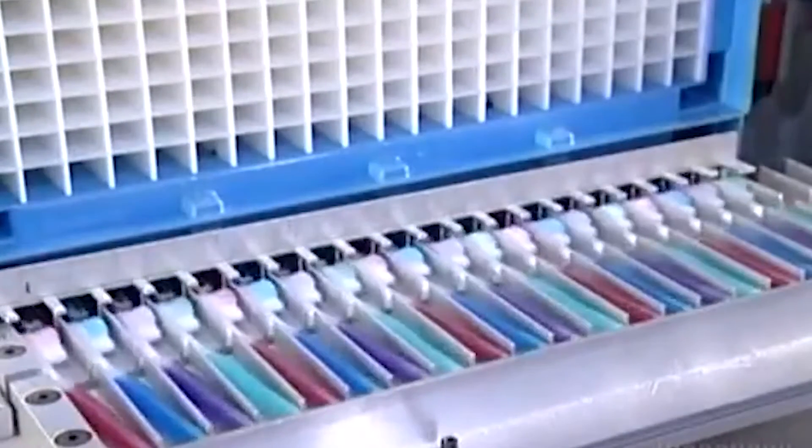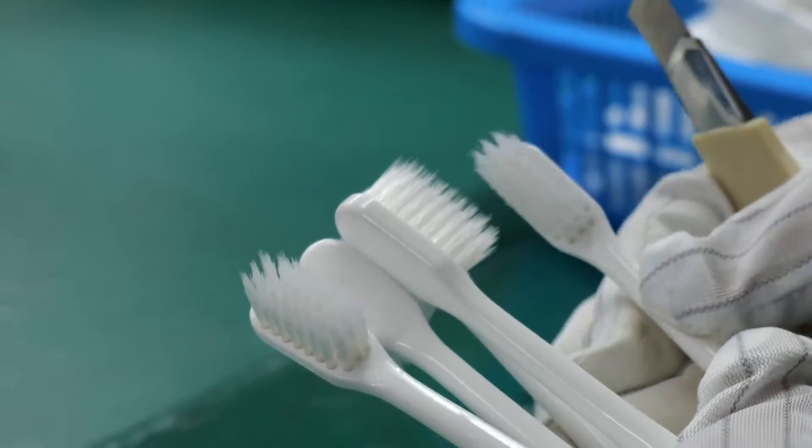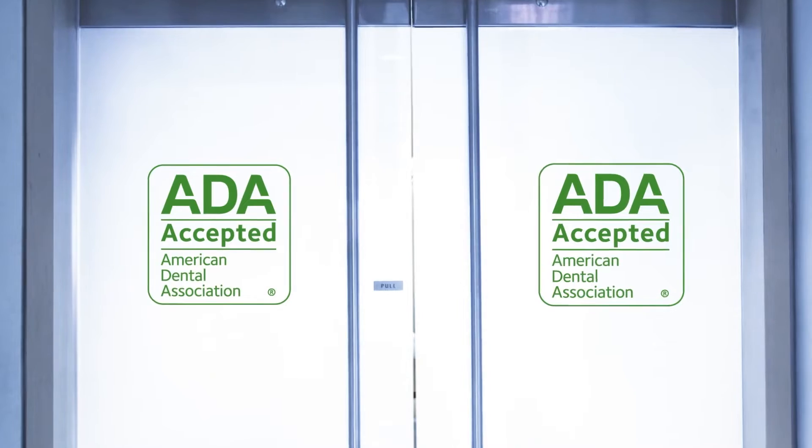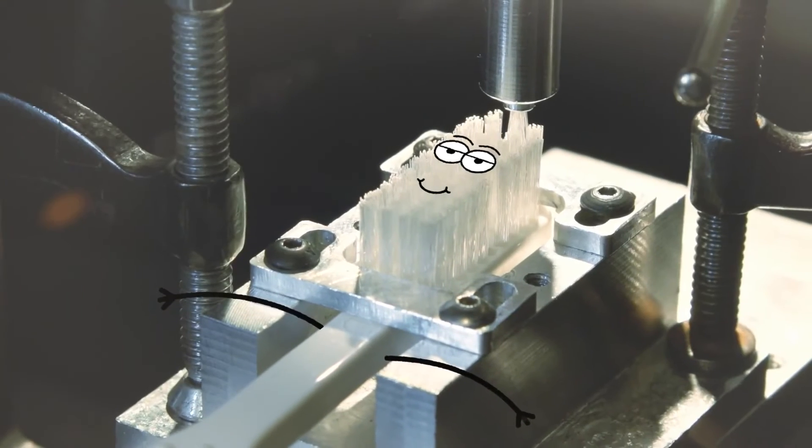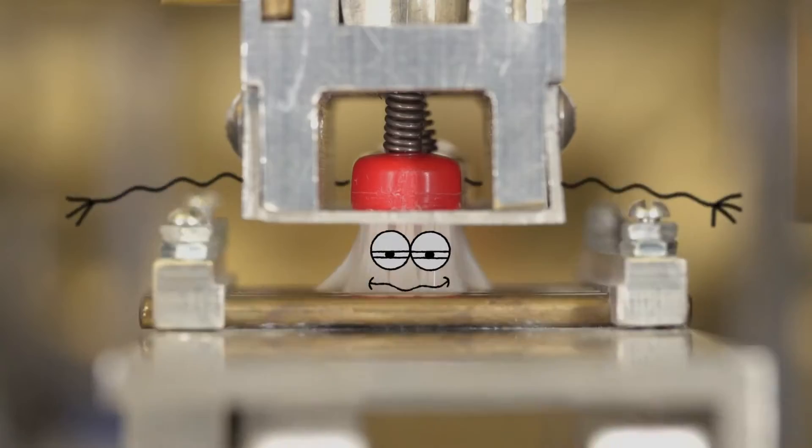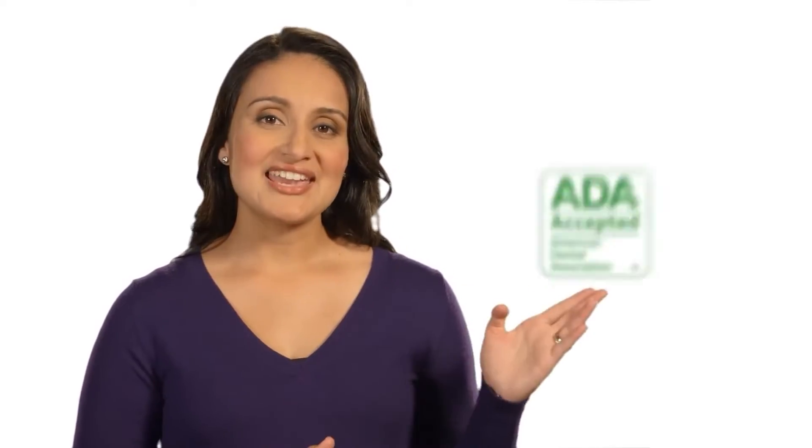Aside from factory approval, the toothbrushes must also comply with a governmental association that standardizes dental products for the public. In America, for example, the American Dental Association tests a number of toothbrushes and other dental products each year. The ADA measures the efficiency and comfort of toothbrushes, and those that meet with their standards are awarded the ADA seal of acceptance.